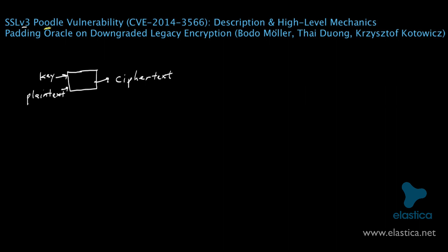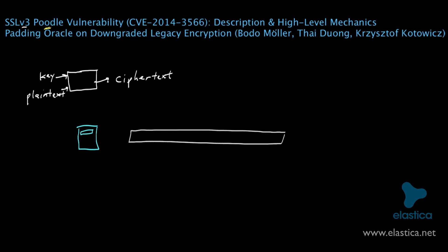So the way the attack works is as follows. Let's imagine you're browsing the web and you have some data — I'll draw that data here as a rectangle. A portion of this data is extremely sensitive, and I'll shade that part here in red. Now imagine you're transmitting that data to a web server, and you're using SSL to encrypt that data.